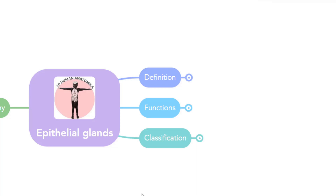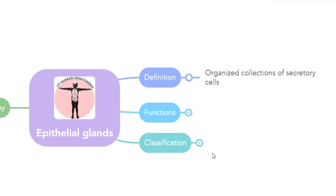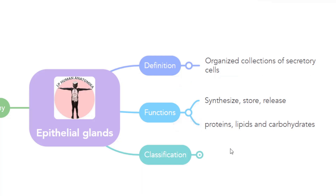In the previous sessions, we discussed about general features and structures of epithelial glands and specific features of salivary glands. In this session, I will be summarizing the whole of epithelial glands. Epithelial glands can be defined as the organized collections of secretory cells. Their functions are to synthesize, store, and release proteins, lipids, and carbohydrates.